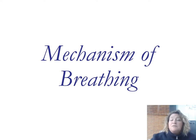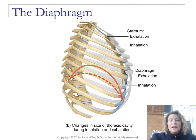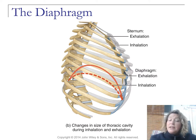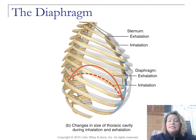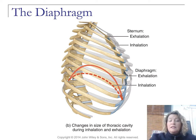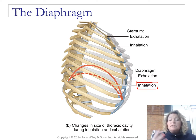So let's look at the mechanism of breathing itself. Let's begin with the diaphragm. The diaphragm is really important when we talk about inhalation and exhalation because the contraction and relaxation assists with both. The diaphragm is going to contract on inhalation — you can see this contraction and flattening of the diaphragm, which allows the lungs to expand.